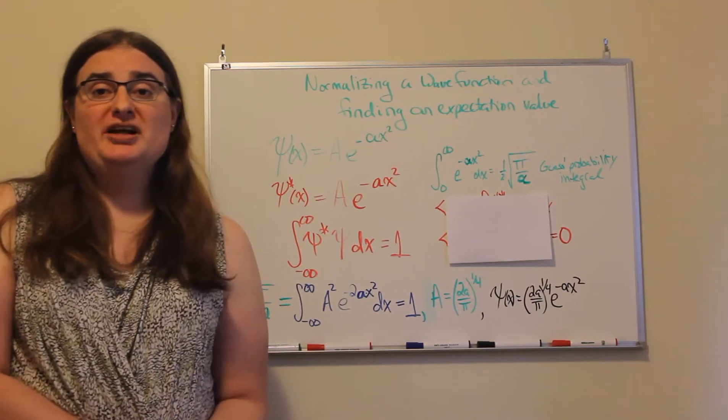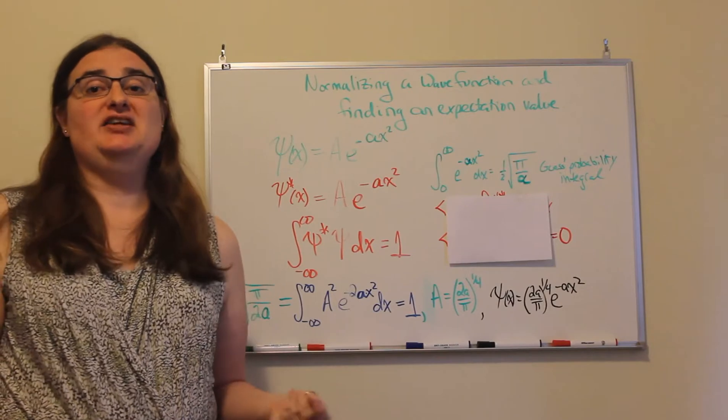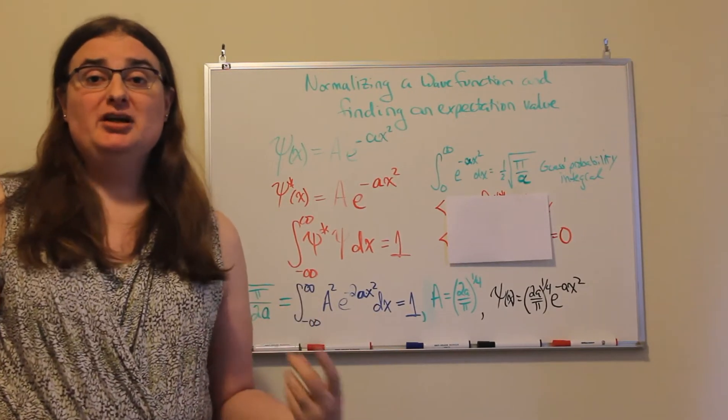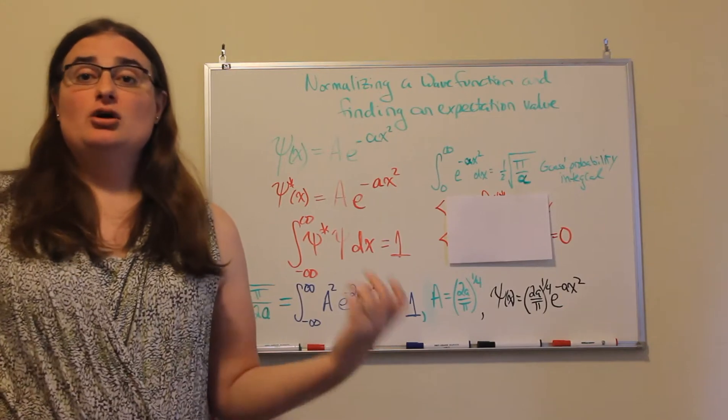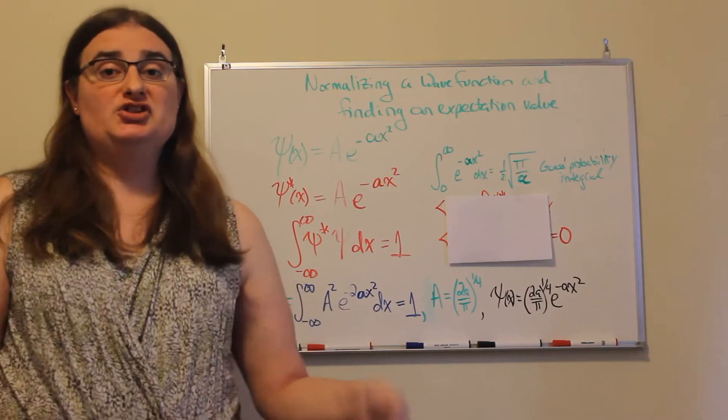And then once we have a normalized wave function, we'll be able to use that to calculate expectation values. Now normalized just means if we're looking at a probability, then we have a 100% chance of seeing something happen over all of space.